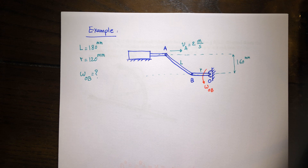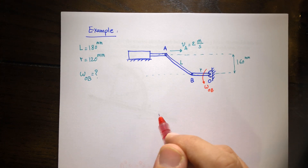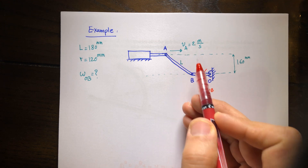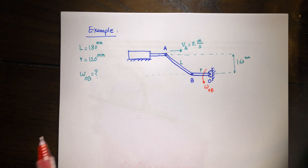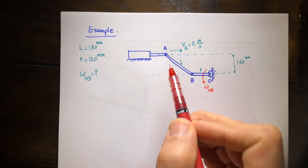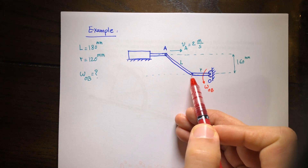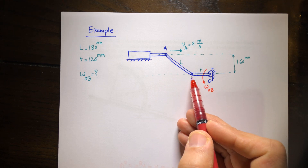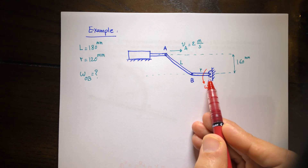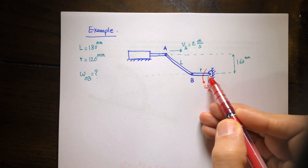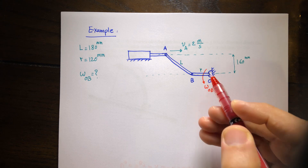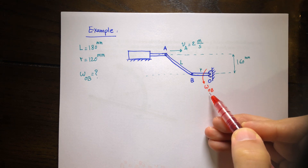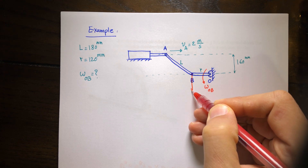So if you think about this problem for a few minutes, we can do it together. How can we relate the velocity of A to the angular velocity of this link? This is my given information and this is my question. I need to relate them to each other. I can do that by relating the velocity of A to B. I know the velocity of A — it is two meters per second — and the velocity of B can be written in terms of omega OB. Look at this link: it is pinned to the ground at point O, and B is a point on this link. So when the link rotates with angular velocity omega, the velocity of B is going to be in this direction.